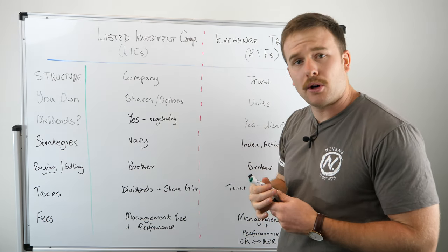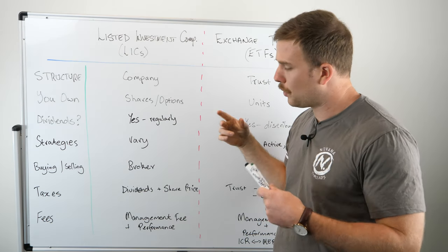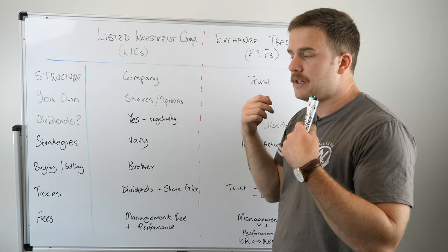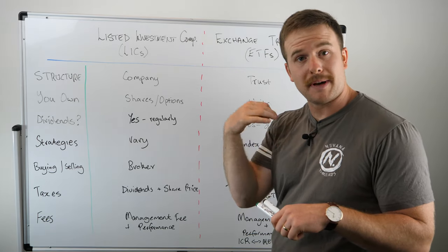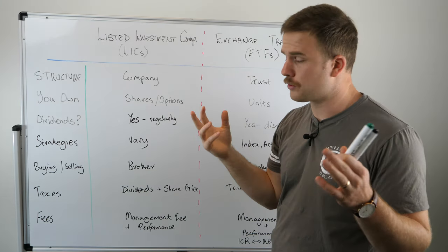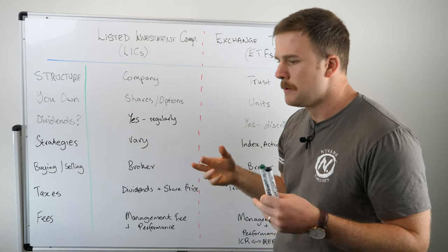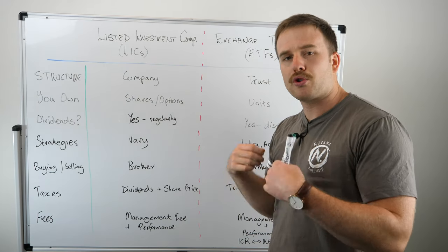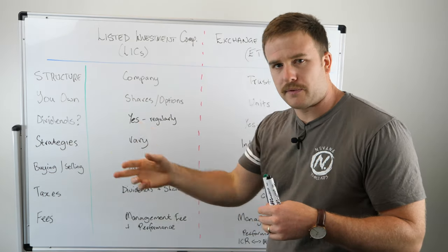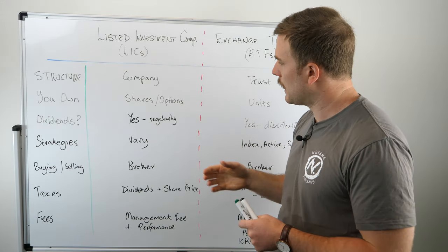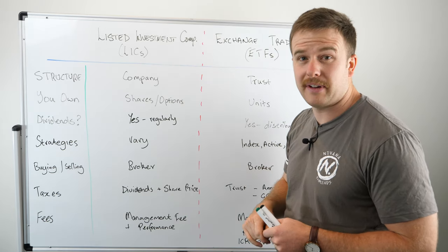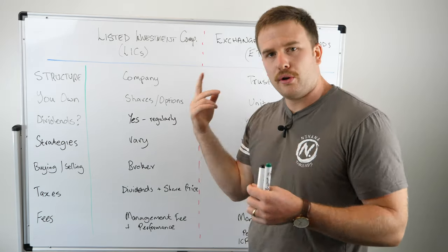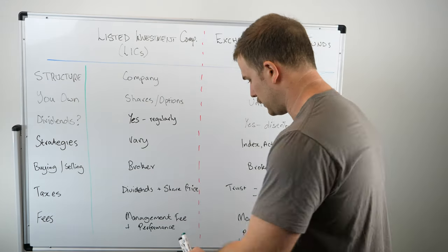With an LIC, you might also get options and they're typically given to you when you buy into an LIC that is really new or is about to launch. The option is effectively just a contract which says you can buy more shares in the LIC in the future if you like. You don't have to, but you can. That can have an effect on the share price of a listed investment company.